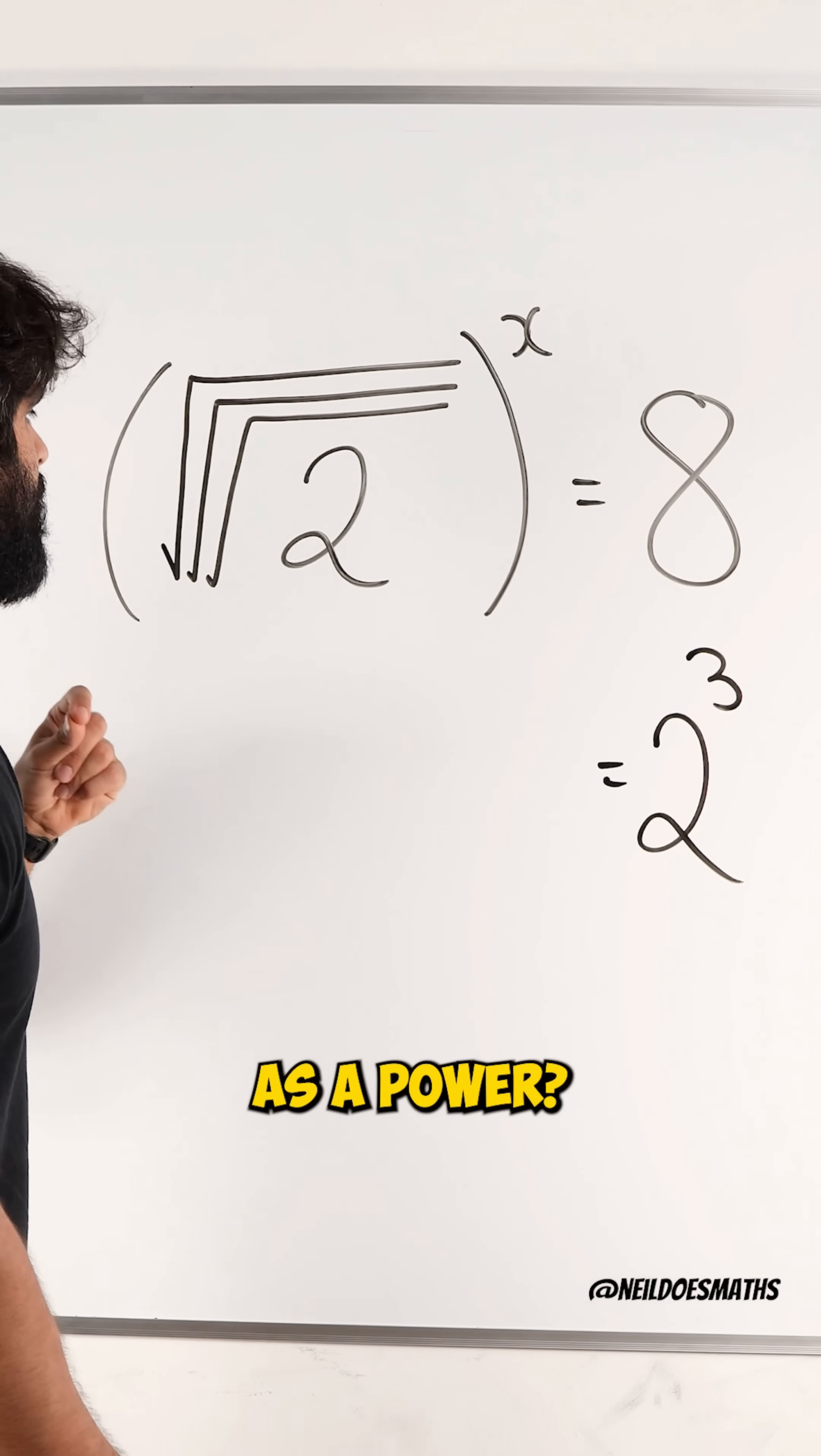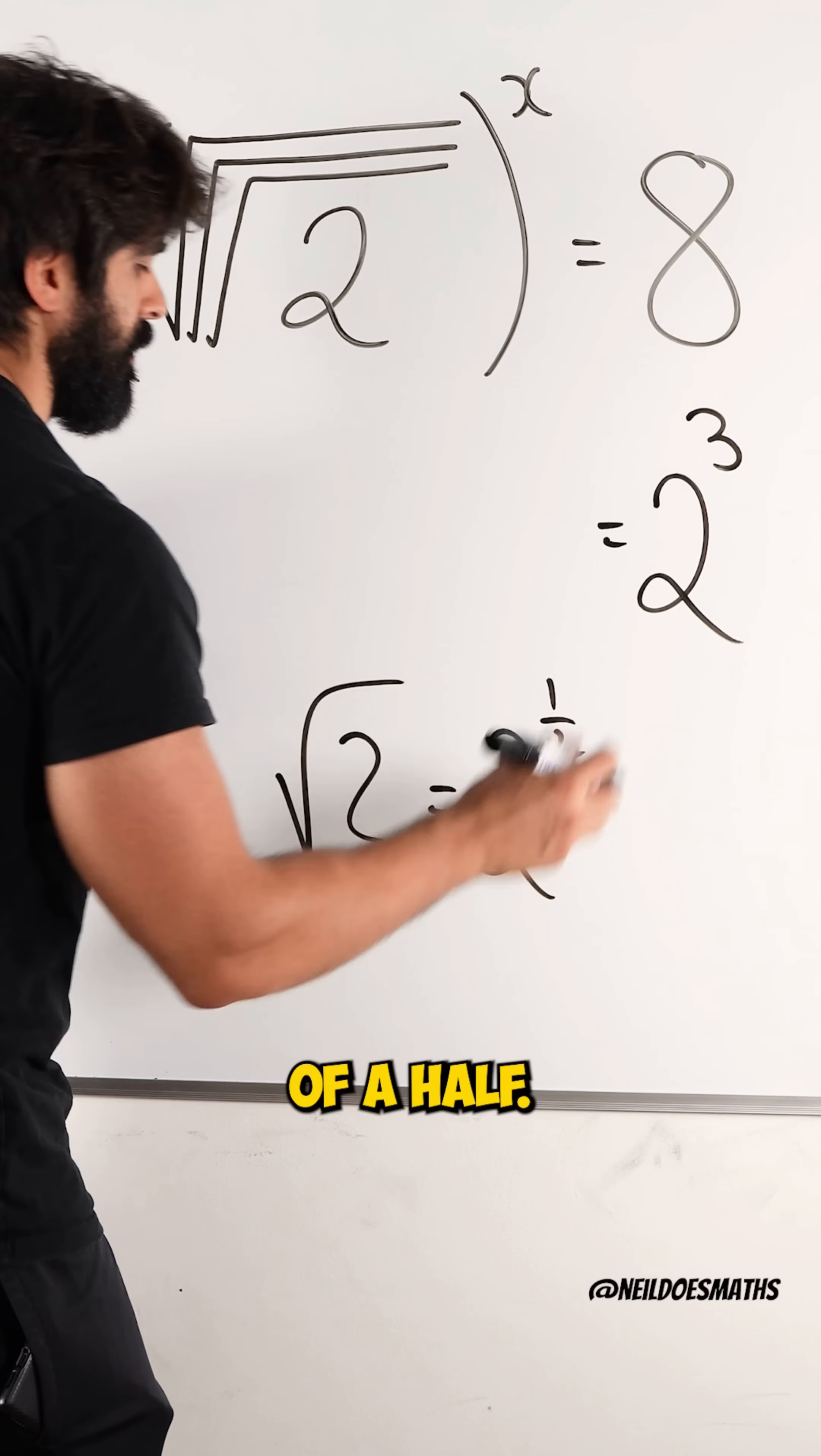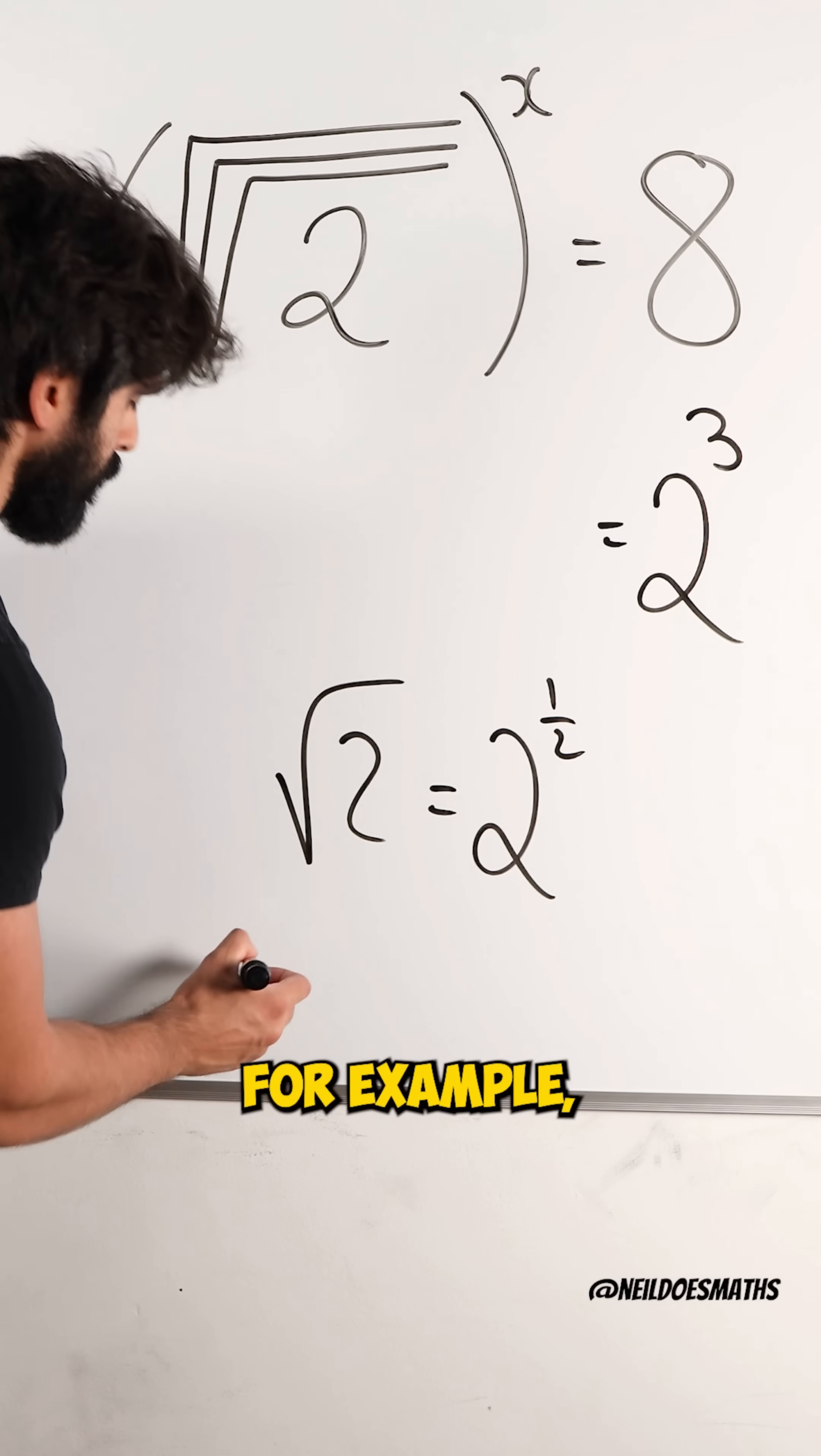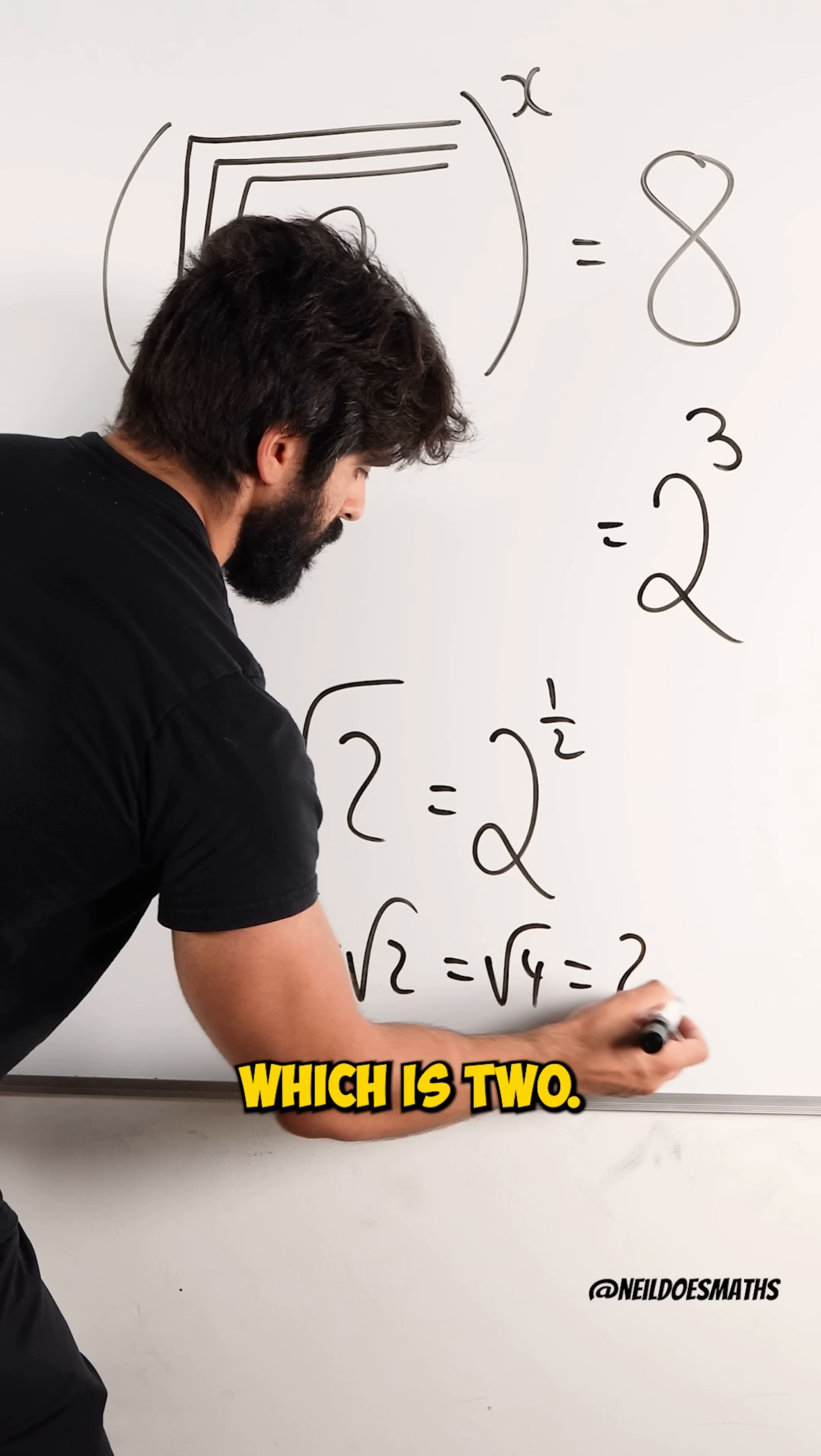What is root of 2 as a power? Well, root of 2 is 2 to the power of a half, and we can show this in many ways. For example, if I do root 2 times root 2, that becomes root of 4, which is 2.